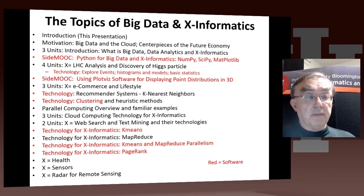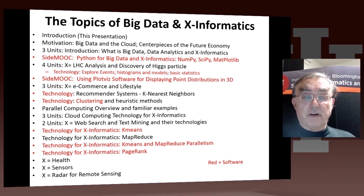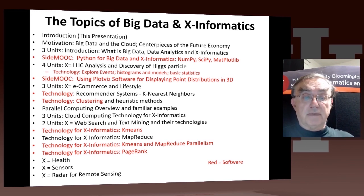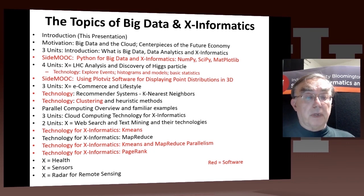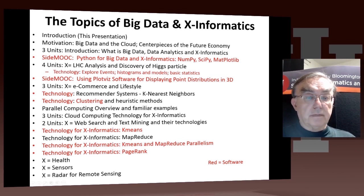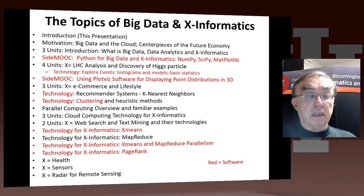After that side MOOC, which is the last side MOOC of this track, we have three units devoted to e-commerce and lifestyle informatics, covering things like Amazon, Netflix, and very well-known websites like that. Some of the core data analytics are called recommender systems, collaborative filtering, and the k-nearest-neighbor algorithm. We also look at clustering, which is used in many cases. We also mention some issues about general heuristic methods. In all of this type of data science, you're not trying to get the exact answer because the data's not exact — you want an answer as good as the data can give you.